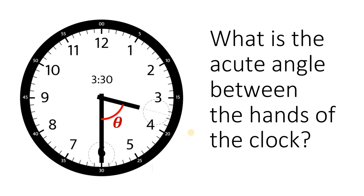Can you solve this math challenge? Here's the question. Given this clock that shows 3:30, what is the acute angle between the hands of the clock?